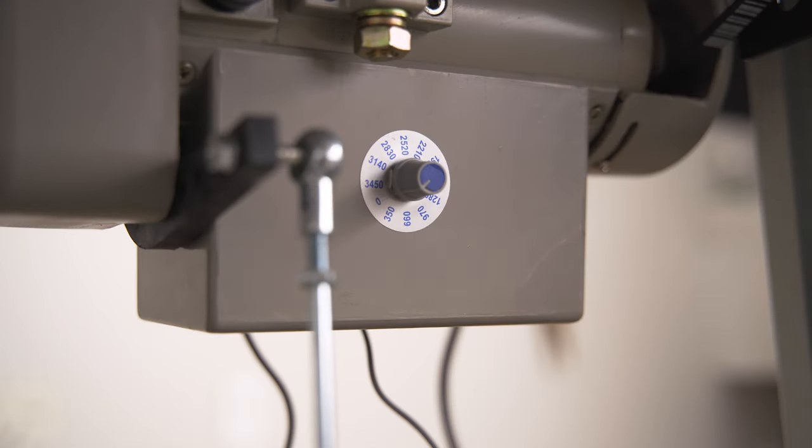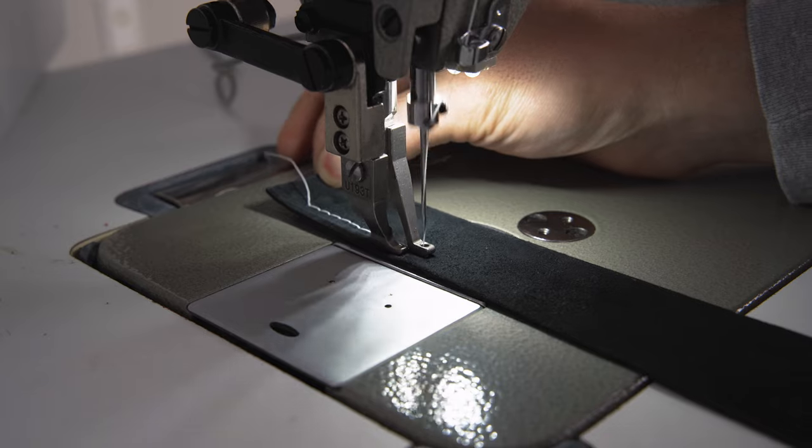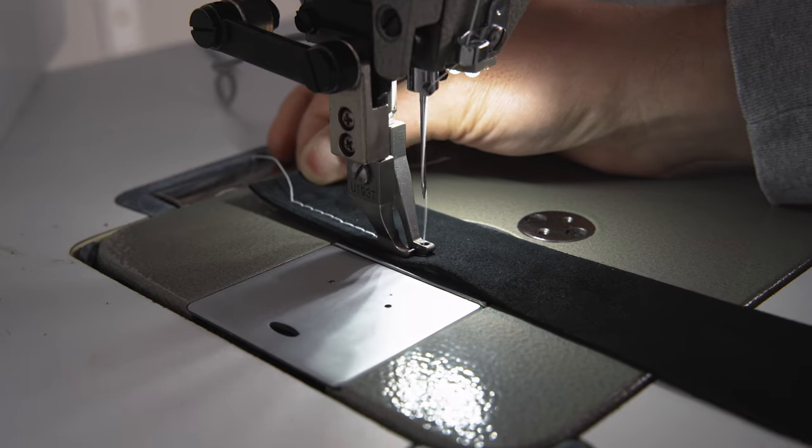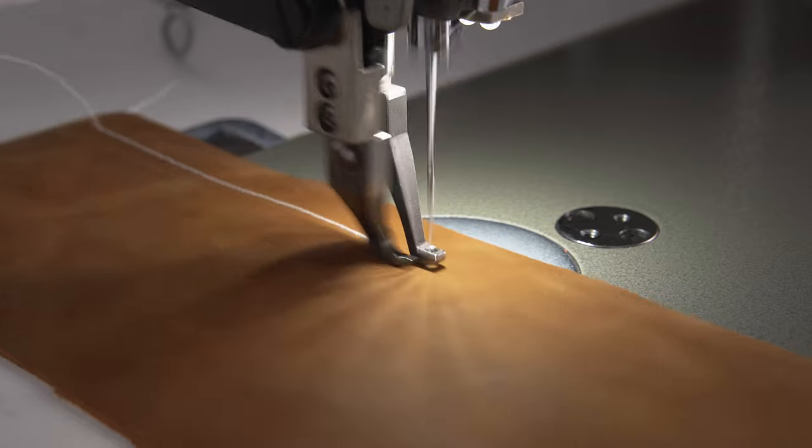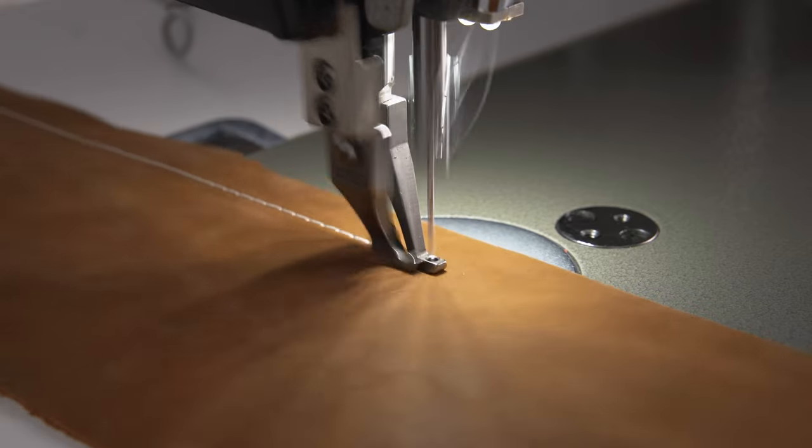The motor speed can be set with a speed dial on the servo motor. Slower speeds are great for those new to stitching or on more intricate work, while faster speeds may be desirable when working on larger projects.